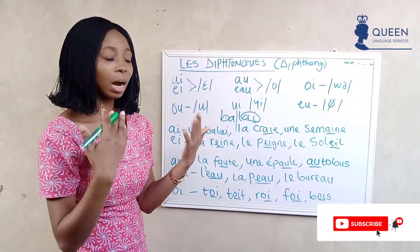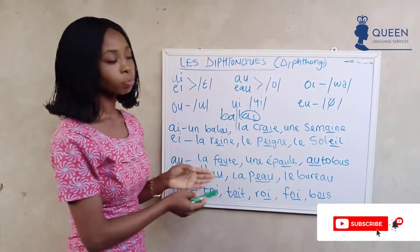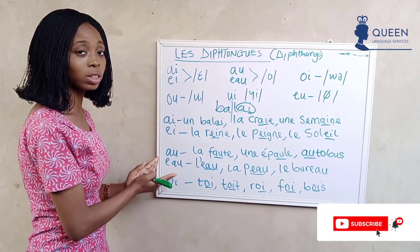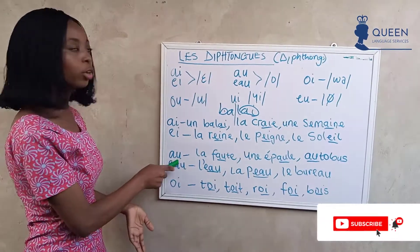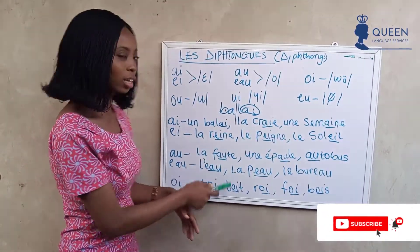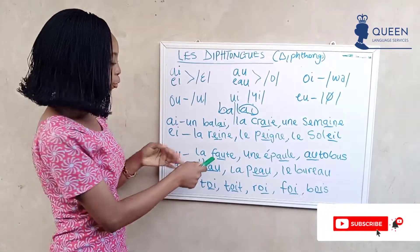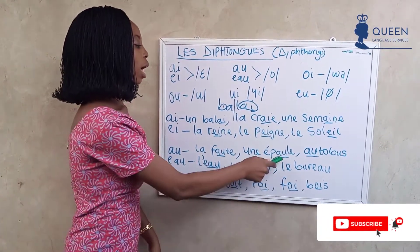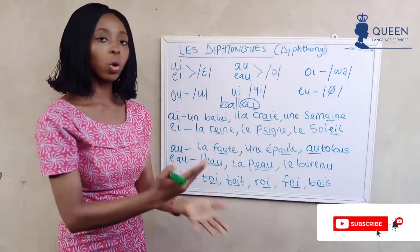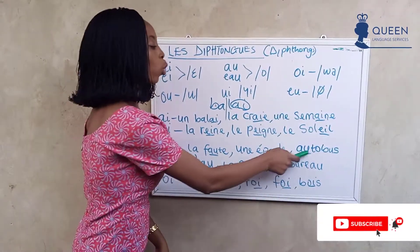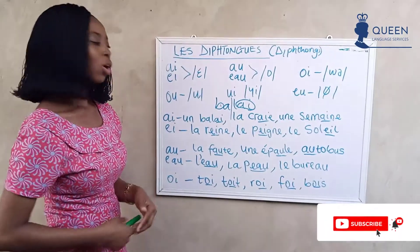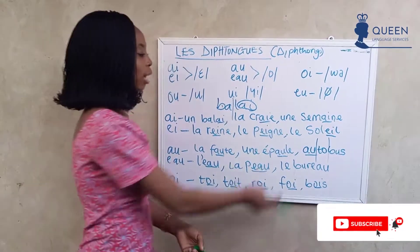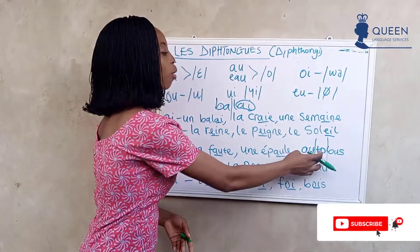Moving on, we have the 'o' sound. The written forms are different but both give the 'o' sound. We have 'au' in words like 'la faute', meaning 'mistake', and 'un épaule', meaning 'shoulder'. We also have 'auto' and 'abus'. When we know 'au' gives the 'o' sound, we can break words into syllables easily.